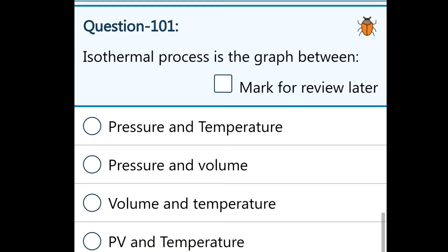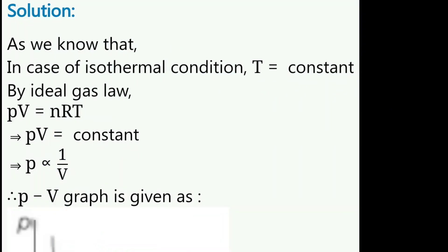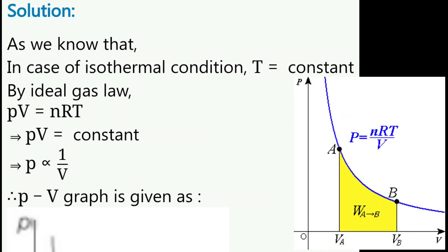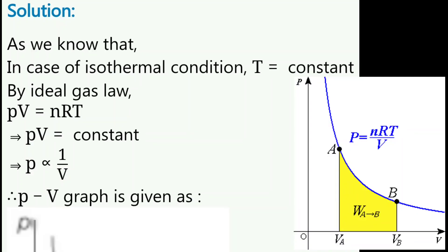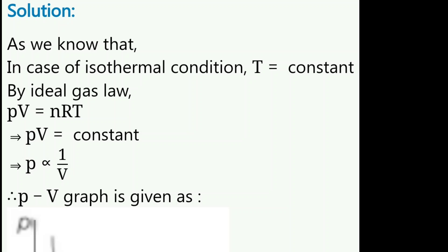Next question: for an isothermal process, the graph is between which quantities? The options are: pressure and temperature, pressure and volume, volume and temperature, or PV and temperature. The answer is pressure and volume. In an isothermal condition, temperature is constant. By the ideal gas law, PV equals nRT, so PV equals constant, meaning pressure is inversely proportional to volume. Therefore, the graph for an isothermal process is between pressure and volume.